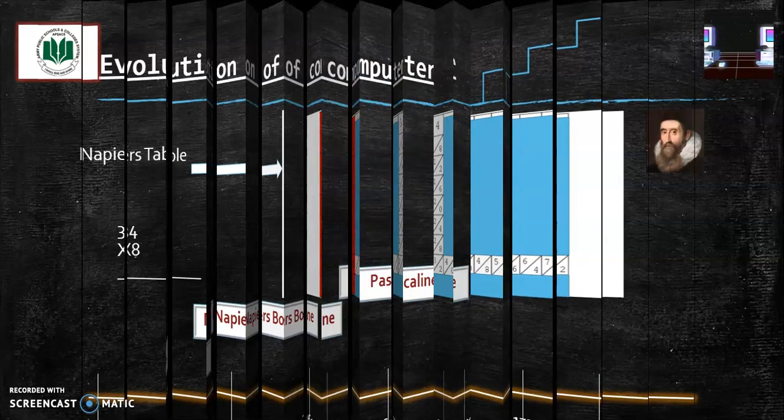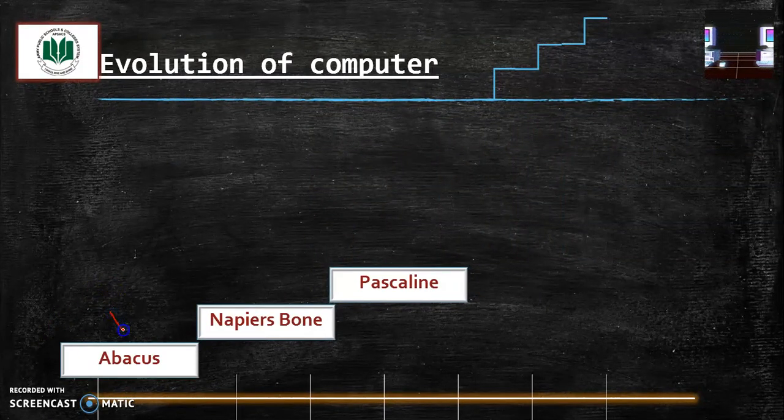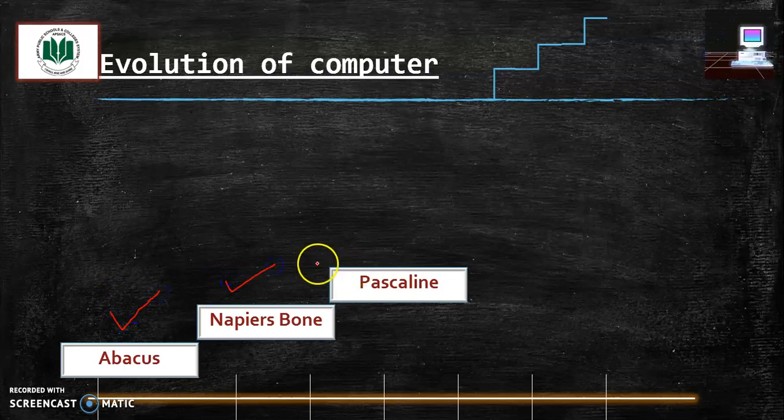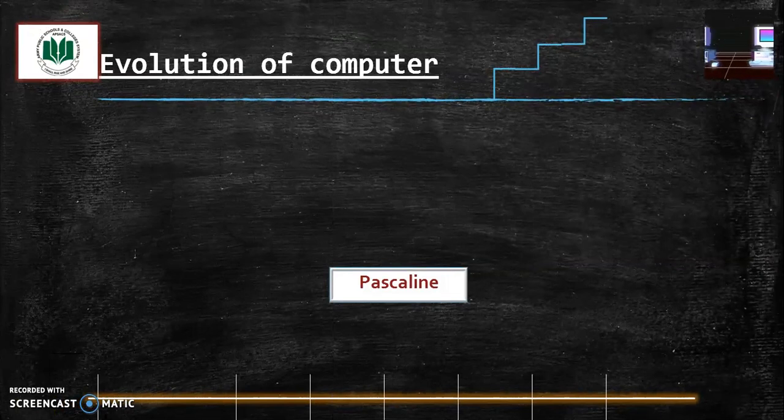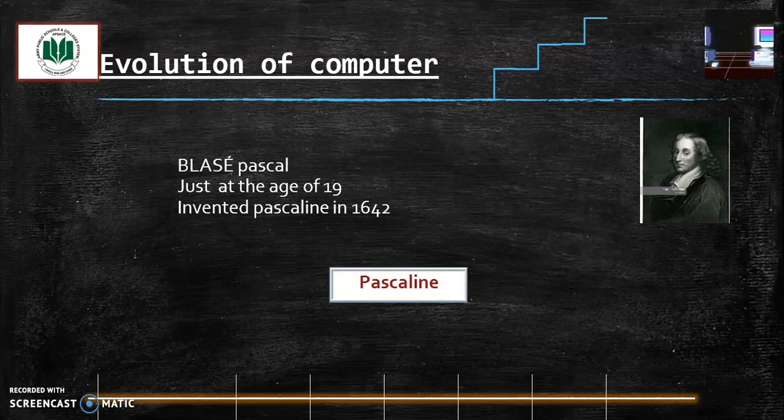Our next topic is Pascaline. So far we read about Abacus, Napier's Bones and third one is Pascaline. What is Pascaline? Blaise Pascal, a French mathematician, just at the age of 19, he invented Pascaline. Now Pascaline is the first electromechanical machine. This is not based on mechanical machine. This is an electromechanical machine and this is much faster than Napier's Bones and the previous one, Abacus.